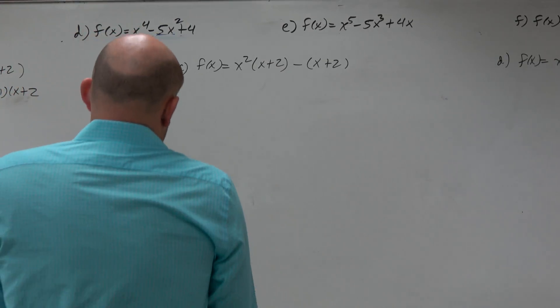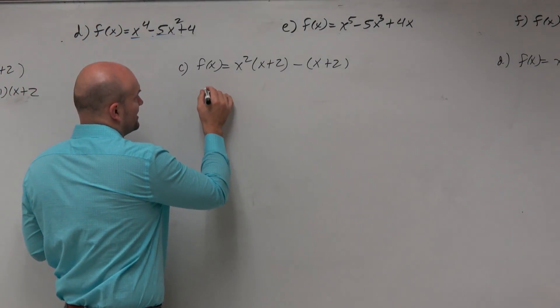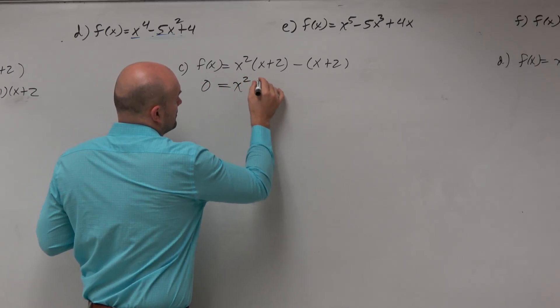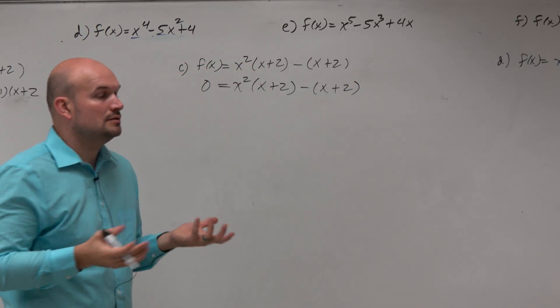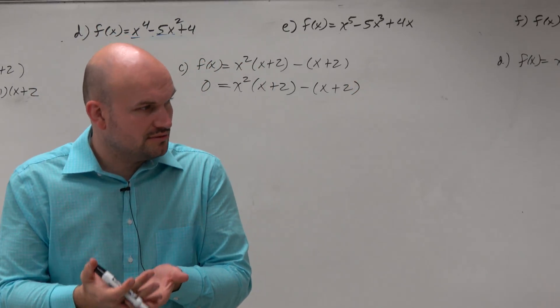The first thing that's kind of important is obviously, if we're finding the zeros, we want to set this equal to 0, right? So we want at least to represent the definition of zeros.